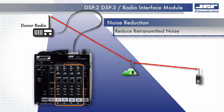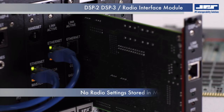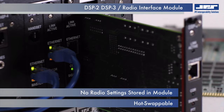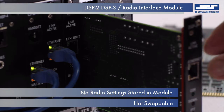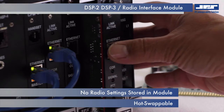Noise reduction aids in the conditioning of receive audio prior to retransmission through other disparate radio systems associated with the ACU gateway. Once provisioned, the DSP module radio settings remain persistent with the slot position and not with the module.